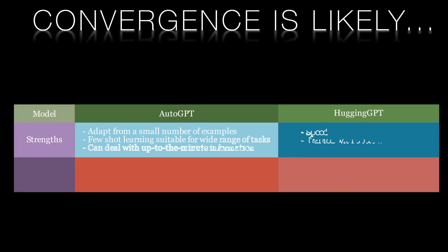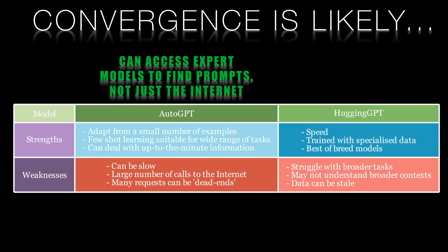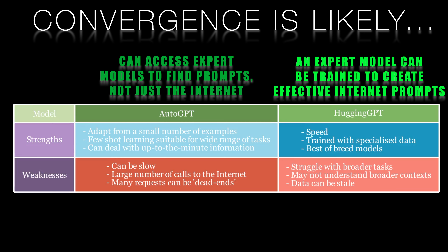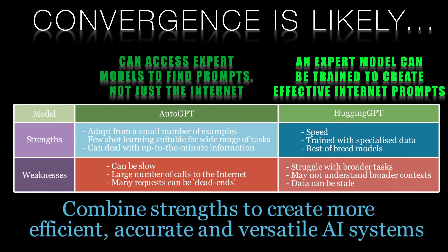Lucidate sees the potential for convergence between both approaches, with Auto-GPT benefiting from some of Hugging-GPT's techniques and expert models. Currently, Auto-GPT searches the internet to get few-shot learning prompts, but why shouldn't it query expert models in addition? At the same time, there's no reason why one of Hugging-GPT's expert models shouldn't be something that queries the very latest information available from the internet. This convergence could lead to a best-of-breed approach, where the strengths of each model are combined to overcome their weaknesses.